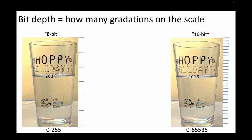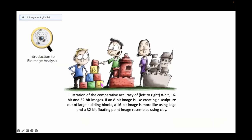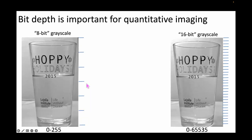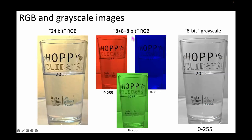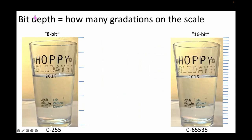There is something called bit depth, which is how many gradations there are on the scale — generally speaking, more is better. With a lower bit depth you can describe images in a less precise way than when you're using 16 or 32-bit images. For most brightfield images you'll be using 8+8+8 bits, creating your 24-bit RGB.